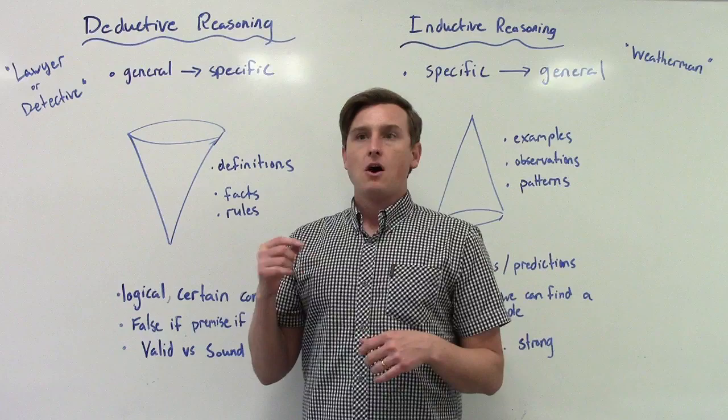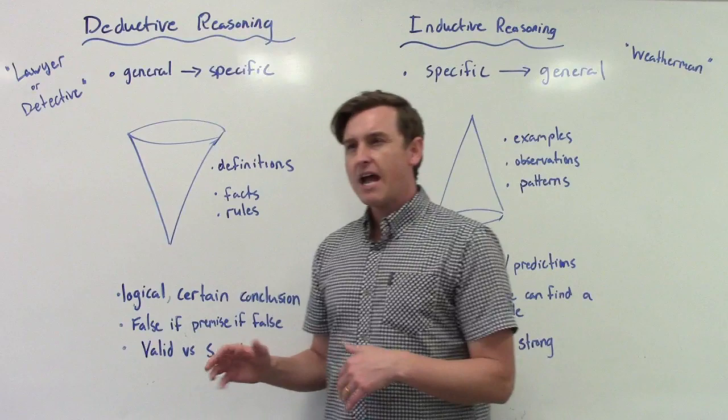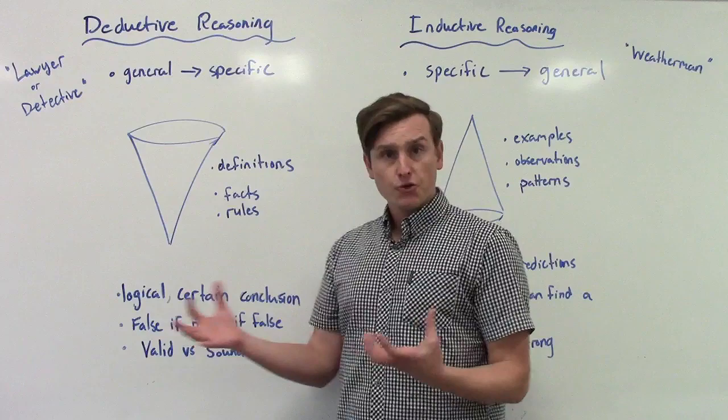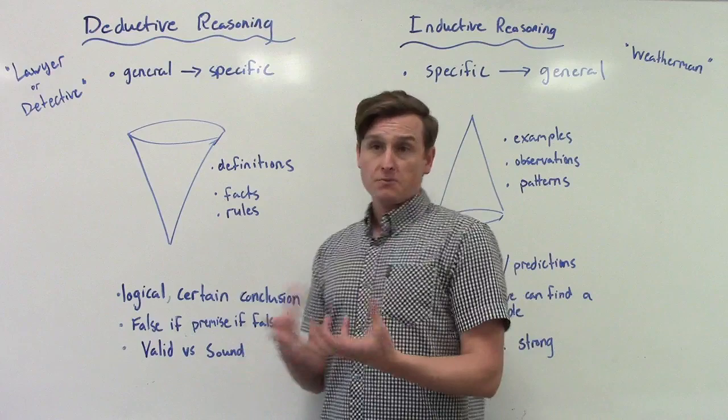So while the argument has validity or it's valid in terms of it follows the rules of logic, it's not actually true because the first statement wasn't true. So instead of saying true or false, we say valid versus sound, right? So an argument can be logically valid, but be not sound because it's not true. It could also be both. It could be valid and sound.